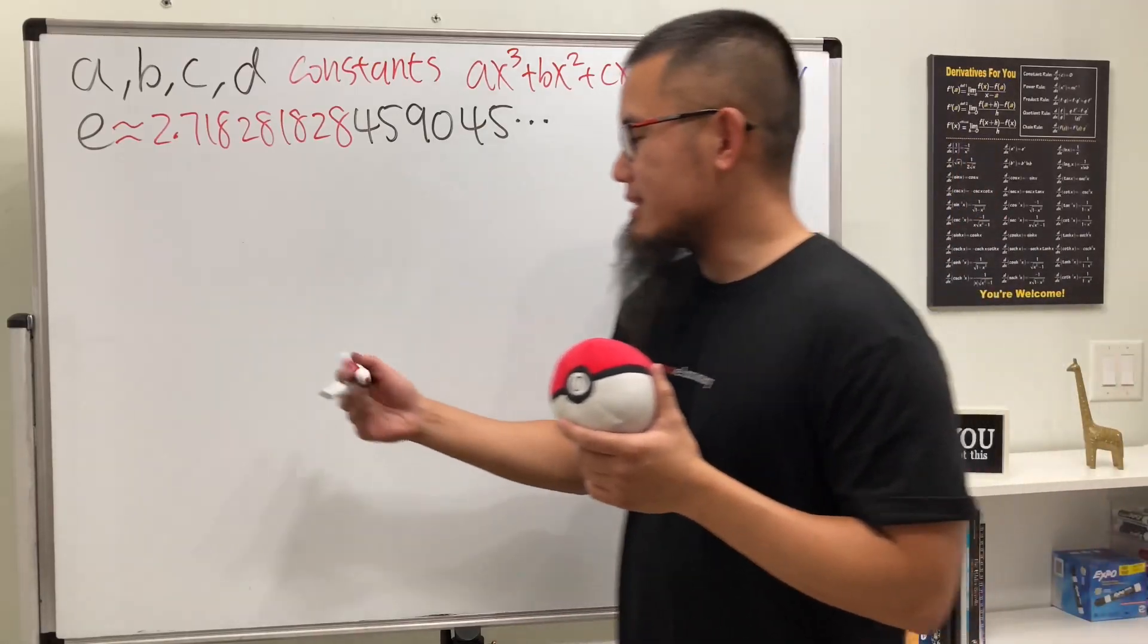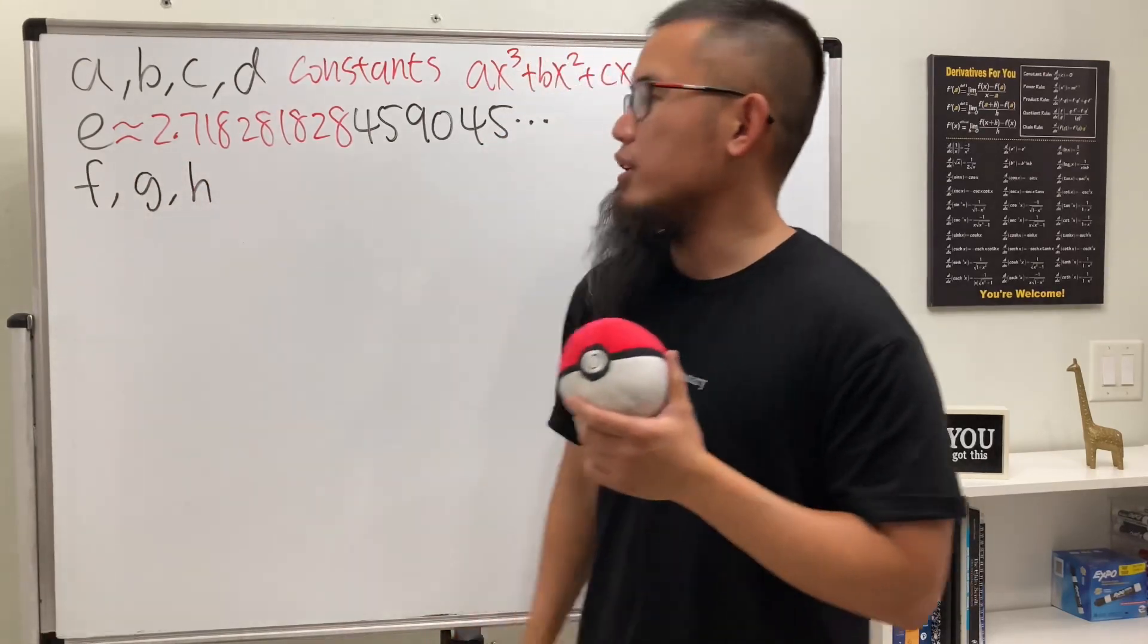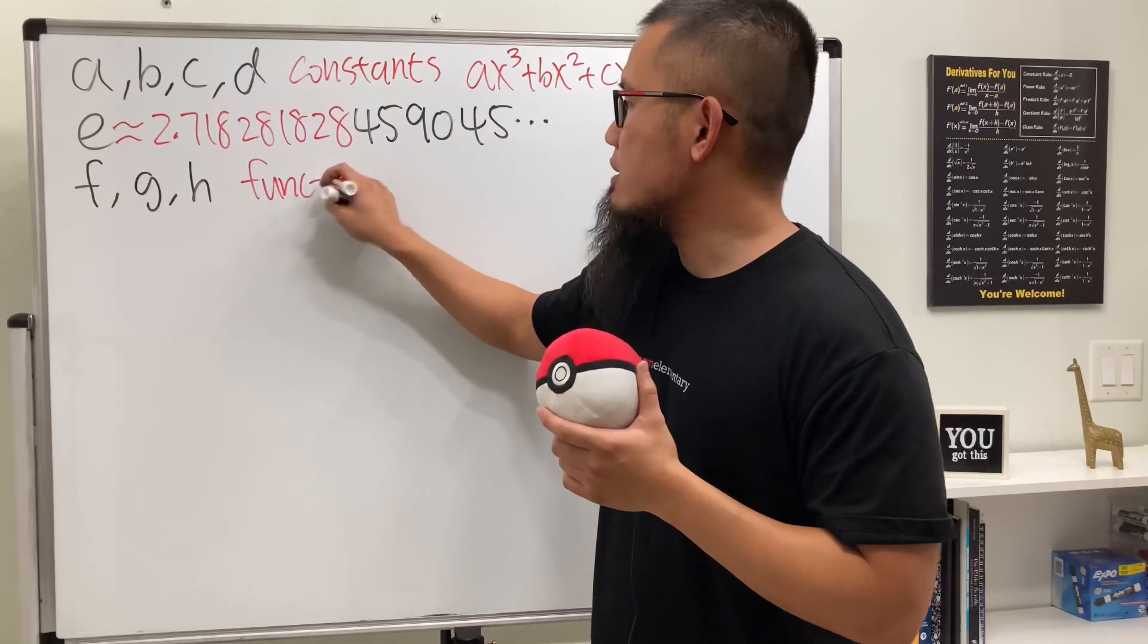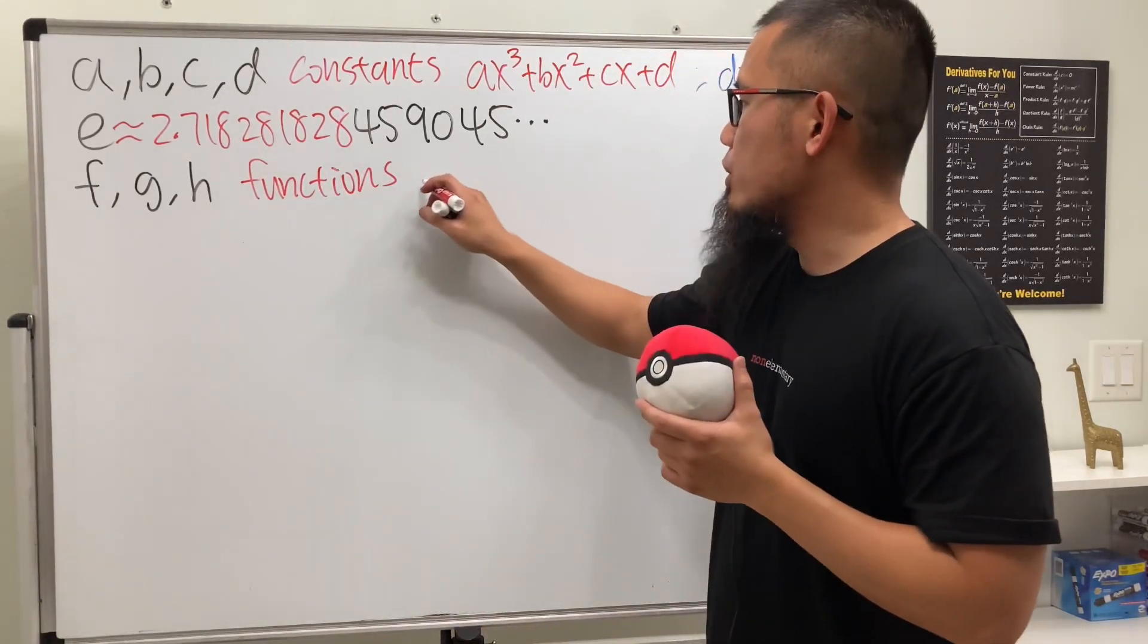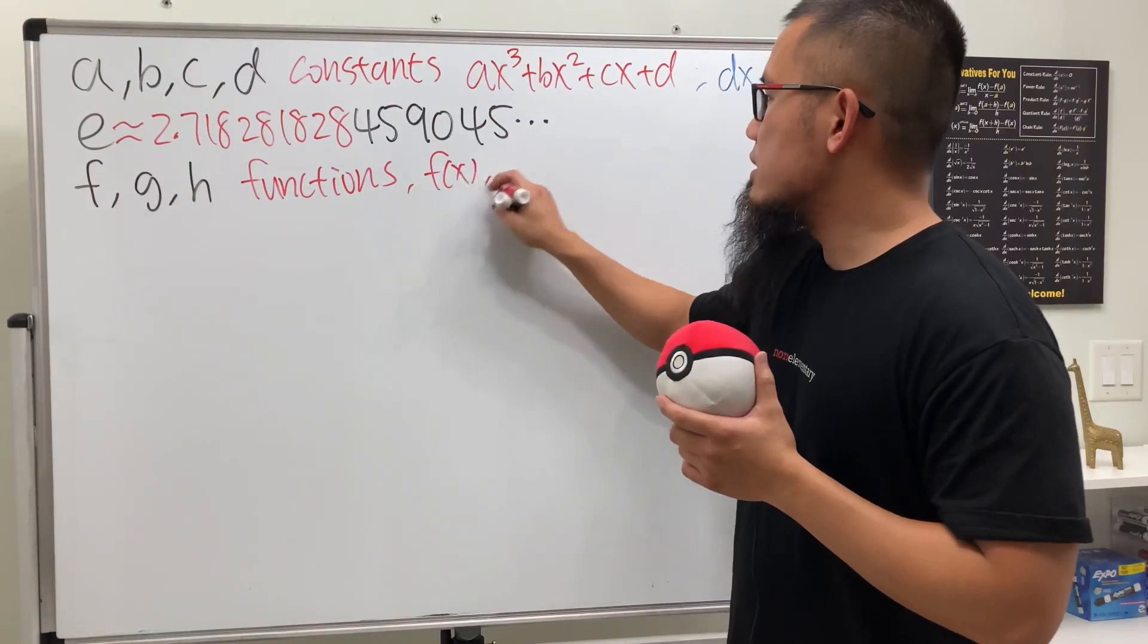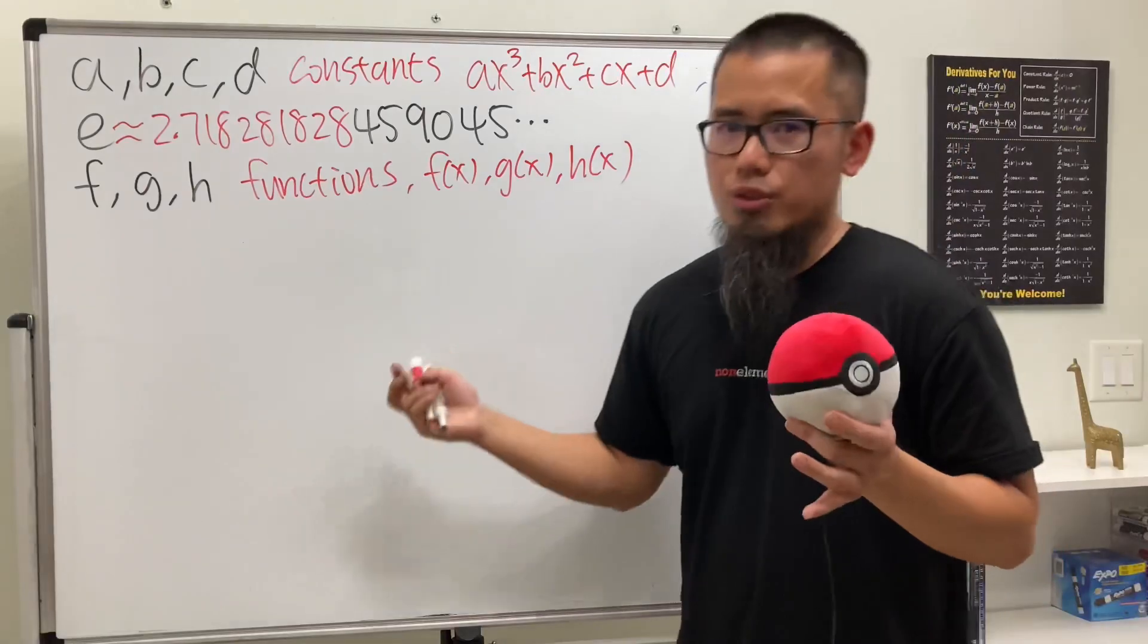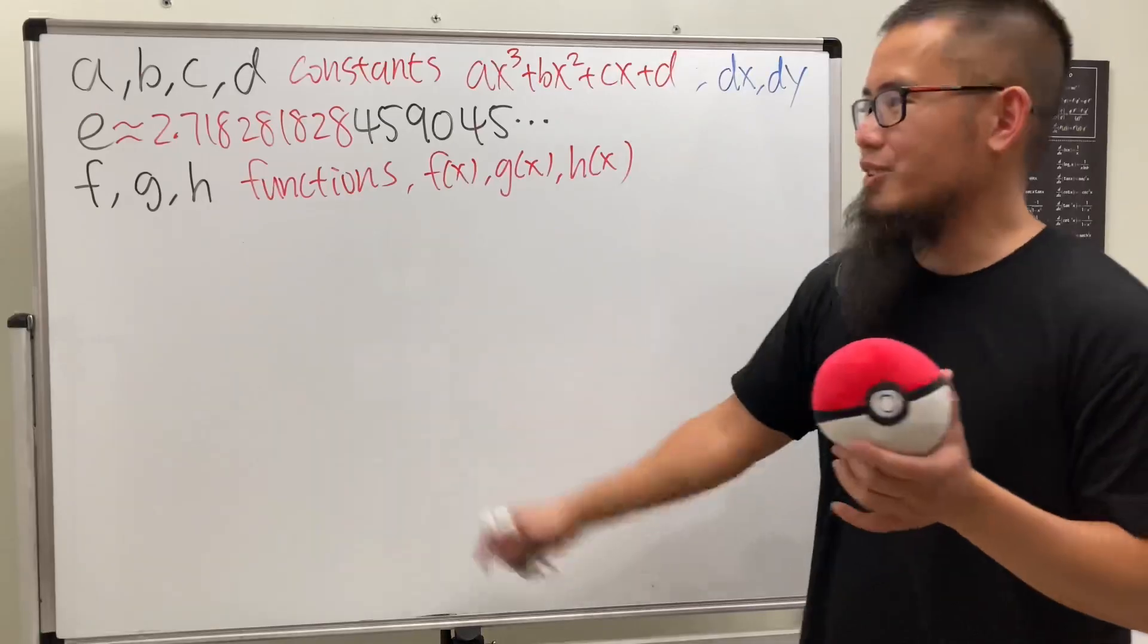Coming up next we have f and its neighbors g and h. These are for functions. We can talk about the typical function notations f(x), g(x), and h(x), and of course f of g of x, etc.